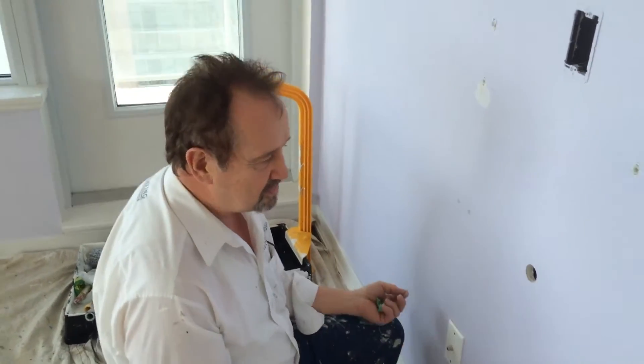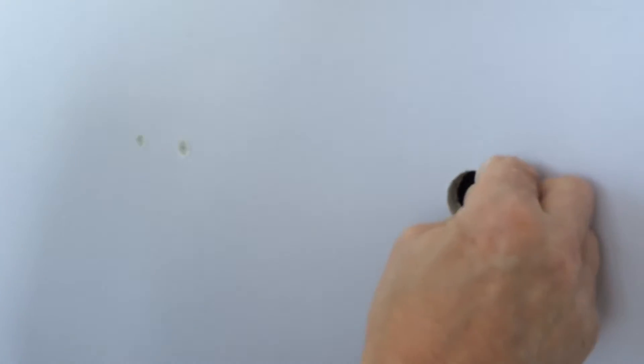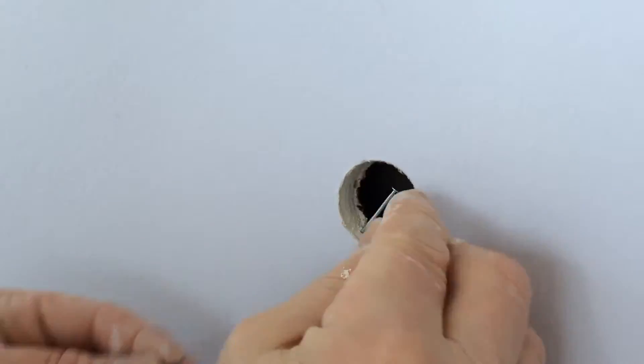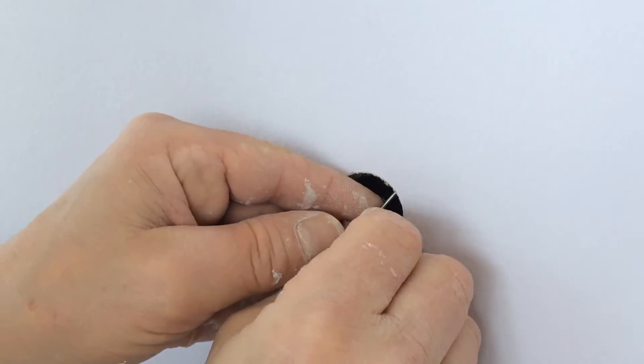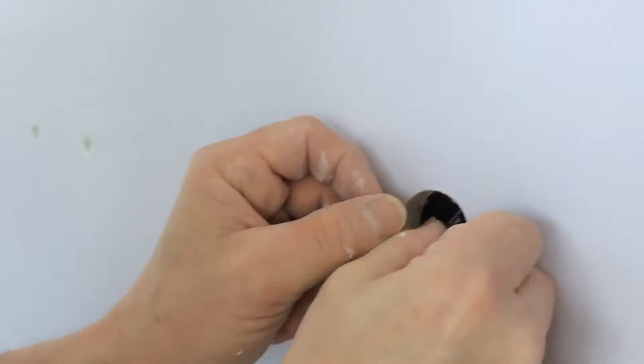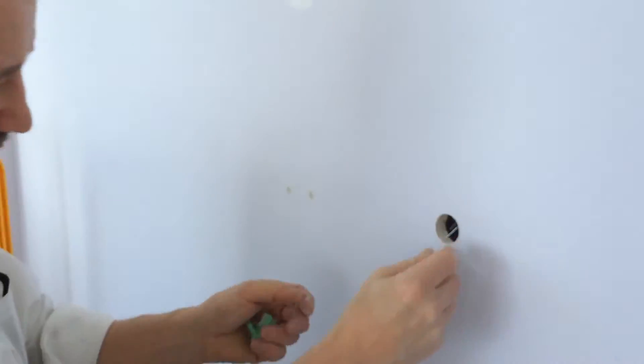So if you've got a hole like this and you don't have a piece of drywall, you can do it a couple different ways. You can pressure fit it or you can just put a nail on the side to stop the plastic from going through like so.